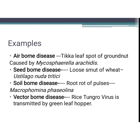Soil-borne disease example is root rot of pulses, caused by Macrophomina phaseolina — also a very important disease. For vector-borne disease, most viral diseases are vector-borne. An example is rice tungro virus, transmitted by the green leafhopper. Note that loose smut of wheat being an internally seed-borne disease is a frequently asked question — take note of it, as most objective questions come from examples.